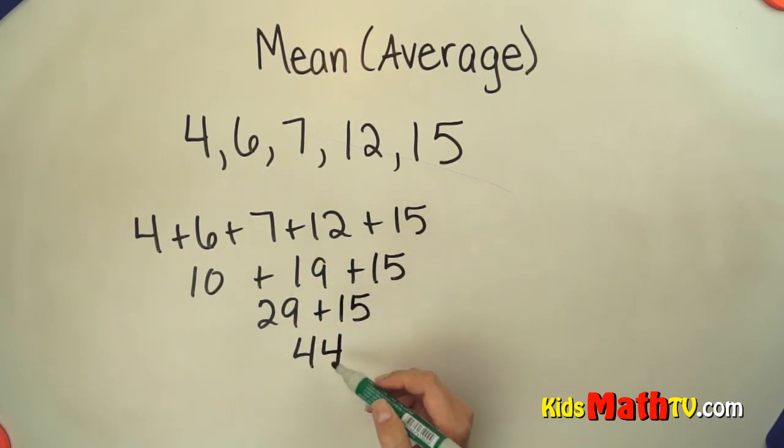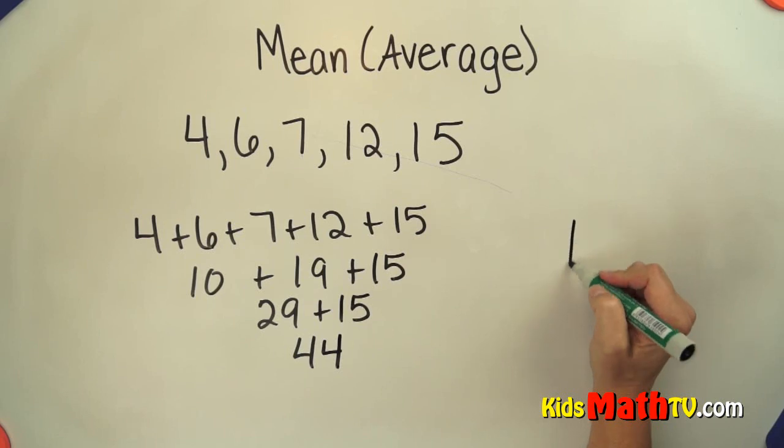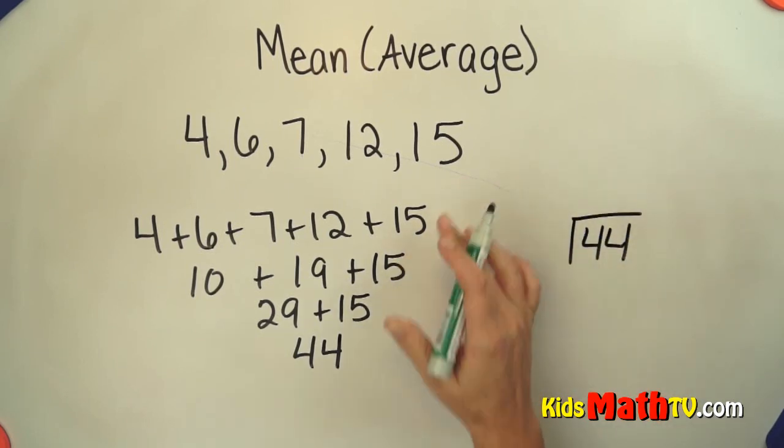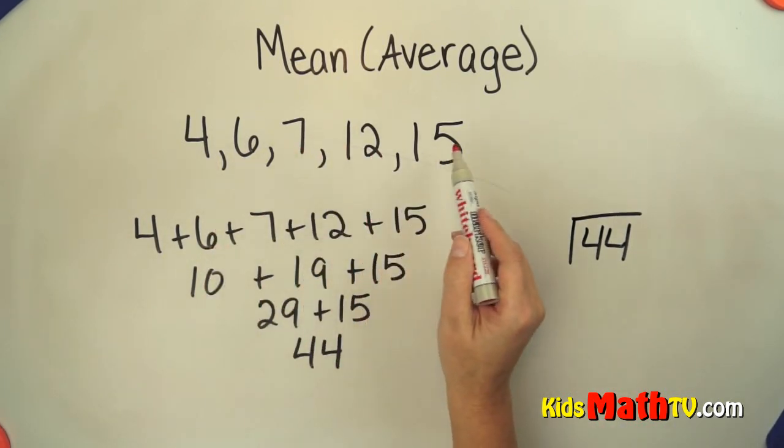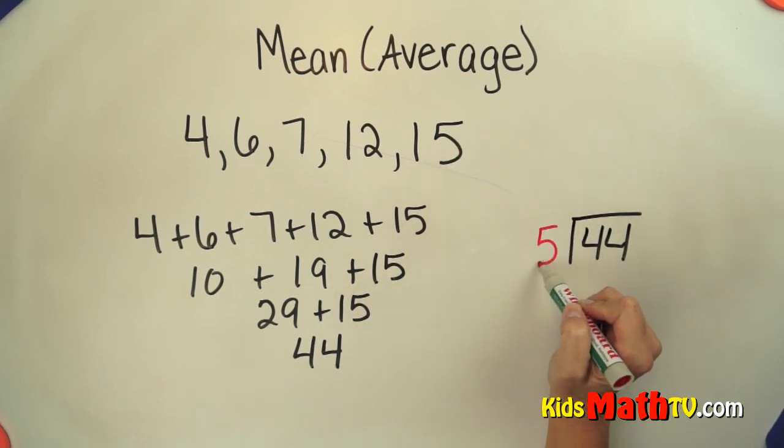So when we add these all together we get 44. Now we're going to take that sum of 44, we're going to divide it by how many numbers are in our set, 1, 2, 3, 4, 5. There are 5 numbers in the set so we're going to divide by 5.